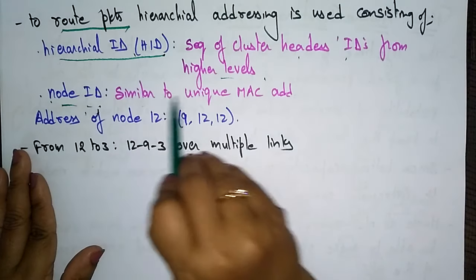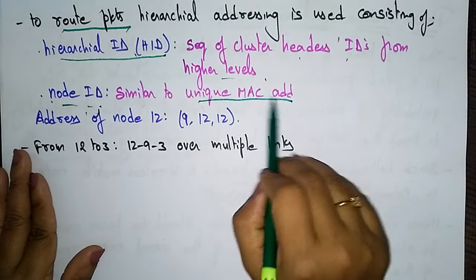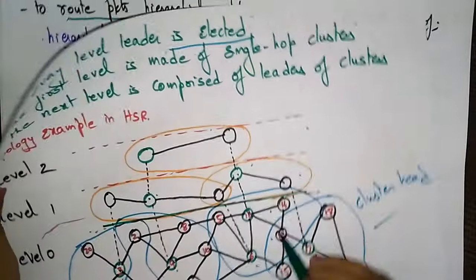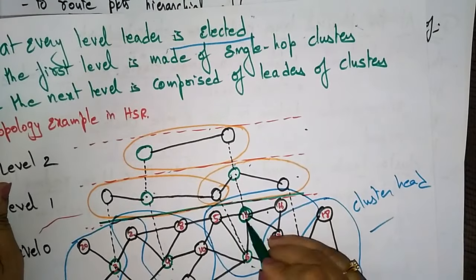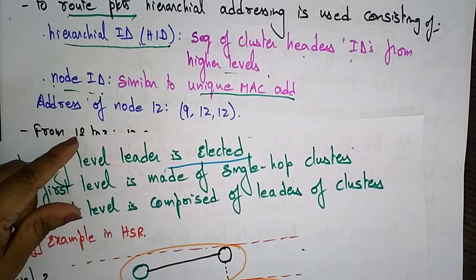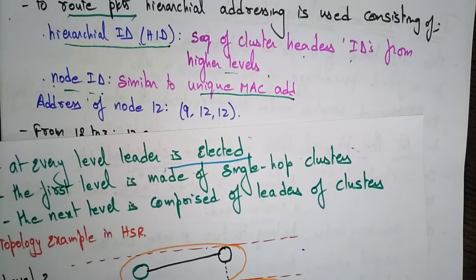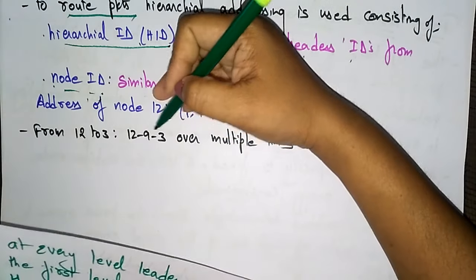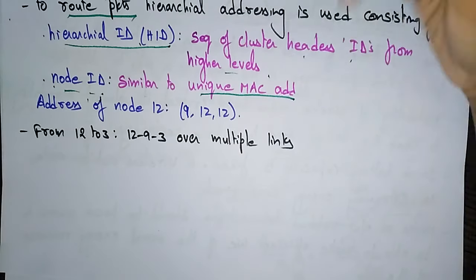The route packets hold information of the node ID as well as the hierarchical ID. The node ID is similar to a unique MAC address. For example, if you take the address of node 12, the address will be 9-12-12, which contains the hierarchical ID and the node ID. From node 12 to 9 to 3, multiple links will be present.